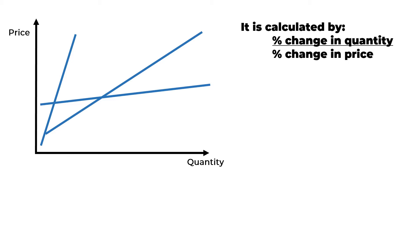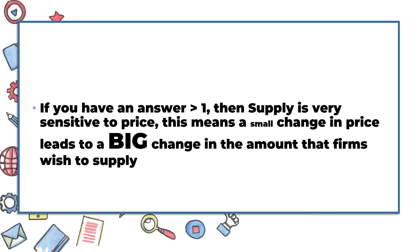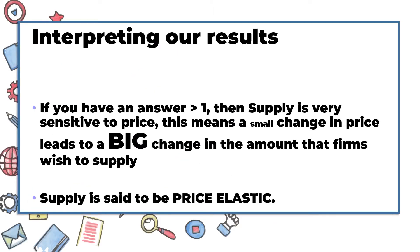PES is calculated by the percentage change in quantity divided by the percentage change in price. It measures how responsive supply is to a change in price — when the price changes, does supply change only a little bit or a lot? When we interpret our results, if the answer is greater than one, supply is very sensitive to price, meaning a small change in price leads to a big change in supply.